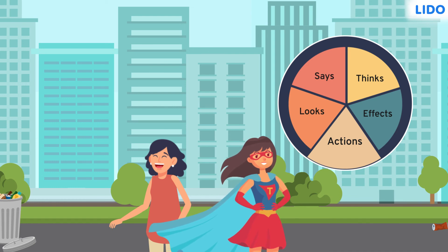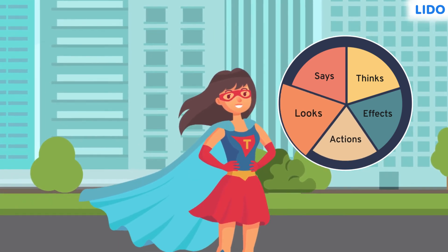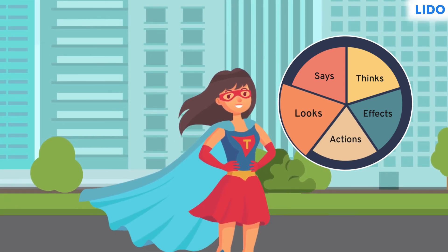Now that we've read her story, we know why she decided to become a superhero. The way a character looks throughout a story tells us something about them too — the way they choose to dress up, the expressions on their face. Everything tells us more about the character's possible actions, thoughts, and effects on others. The T on Shazia's t-shirt shows us how important tidiness is for her.